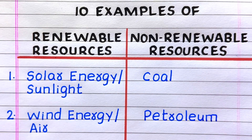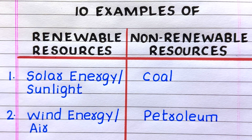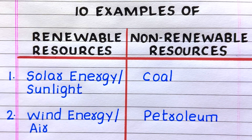The first renewable resource is solar energy or sunlight, and the second is wind energy or air. The first non-renewable resource is coal, and the second is petroleum.